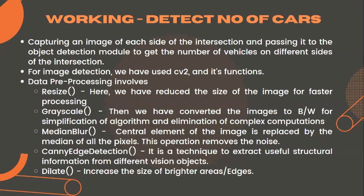What we have done is capture an image of the road on each side of the intersection and pass it to our object detection module to get the number of vehicles on different sides. For image detection, we have used the OpenCV module. The preprocessing functions used include: the resize function to reduce image size for faster processing; the grayscale function to convert the image to black and white for algorithm simplification; the median blur function, where the central element is replaced by the median of all pixels to remove noise; the canny edge detection function to extract useful structural information; and the dilate function, which increases the size of brighter areas or edges in the image.